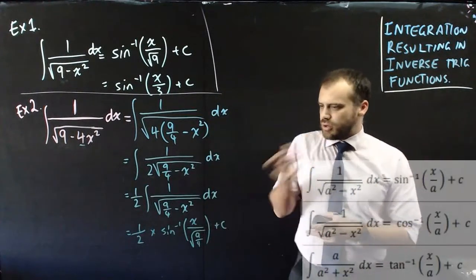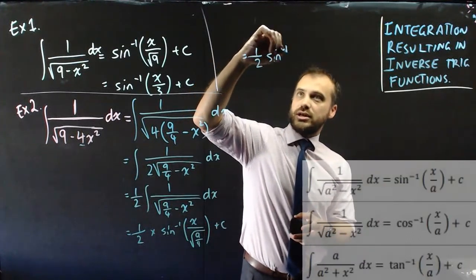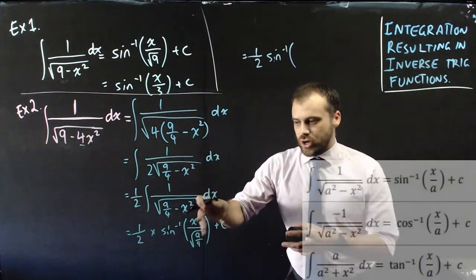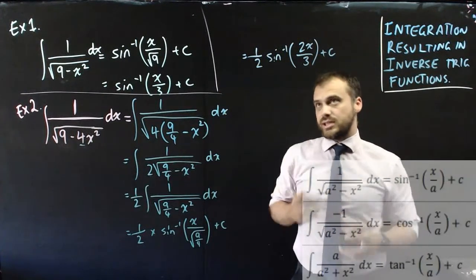Root 9 over 4. Alright, so what about this root 9 over 4? Well the square root of 9 over 4 is 3 over 2. So that's x divided by 3 over 2 which we can write now as equals 1 half inverse sine of x over 3 over 2 will be the same as 2x over 3 and then a little plus c on the end.